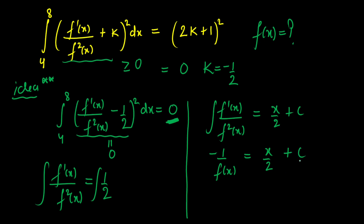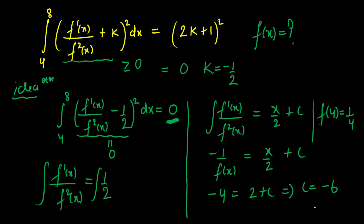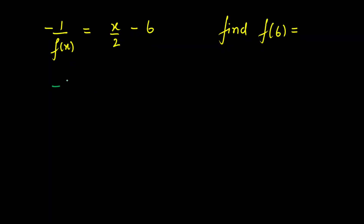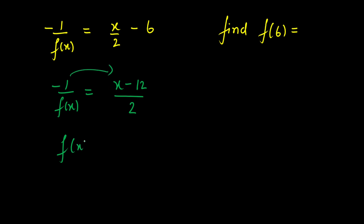Now we calculate the constant of integration using the initial condition f(4) = 1/4. Substituting: −1/(1/4) = 4/2 + c, giving −4 = 2 + c, so c = −6. Therefore, −1/f(x) = (x − 12)/2, and taking the reciprocal and adjusting the negative, we get f(x) = 2/(12 − x).